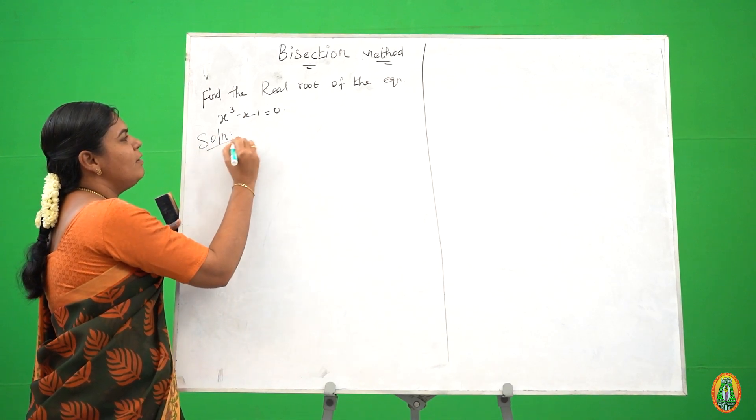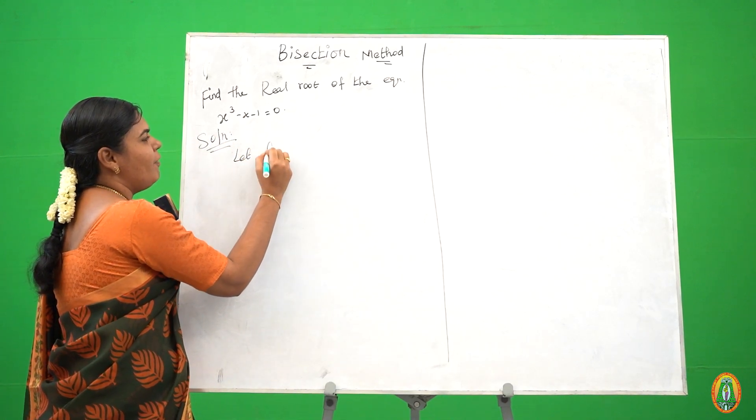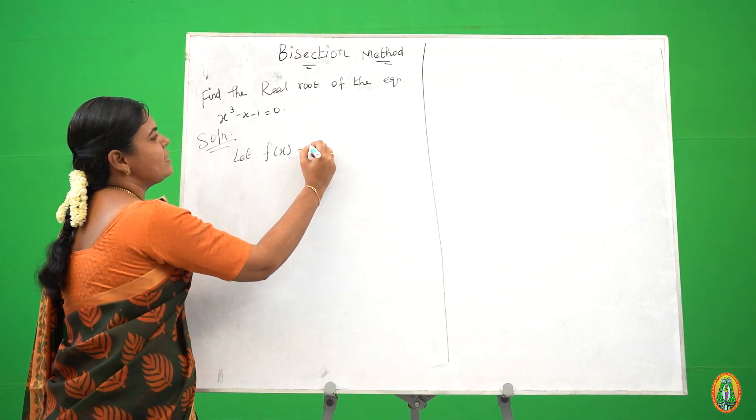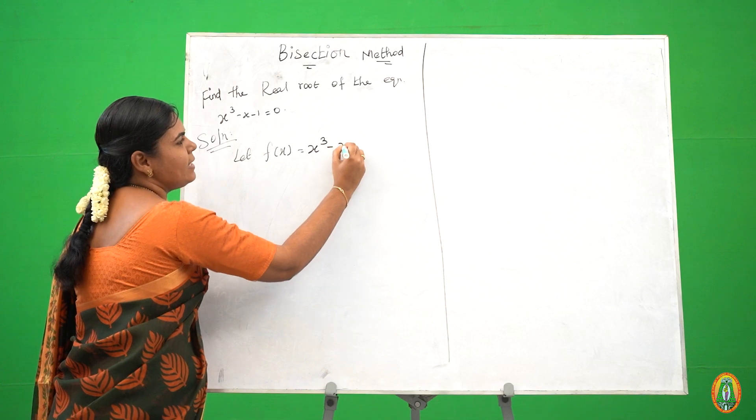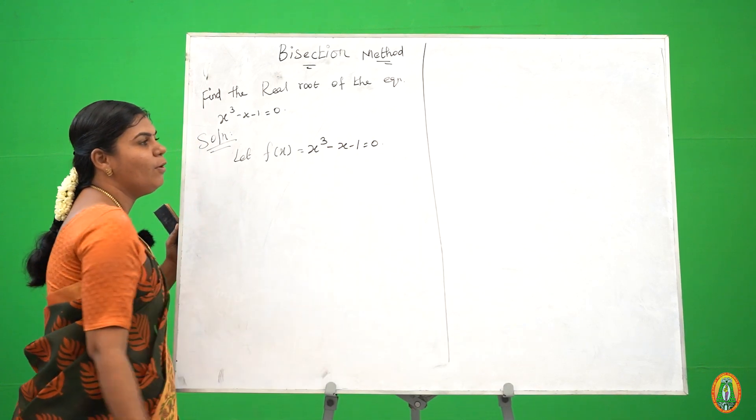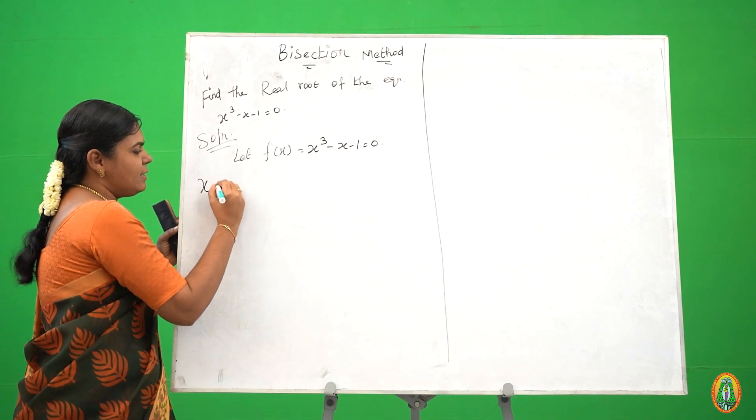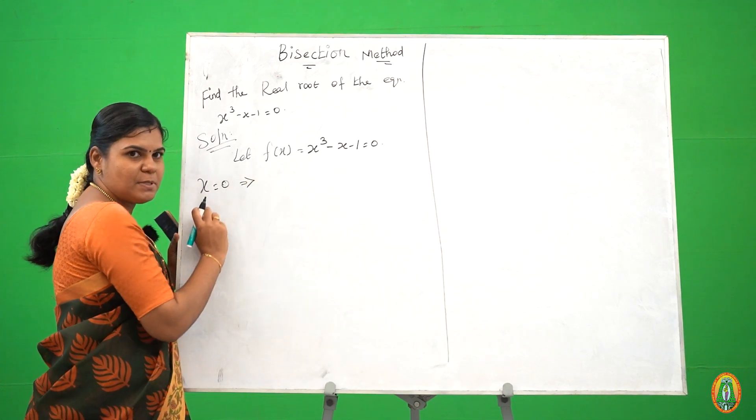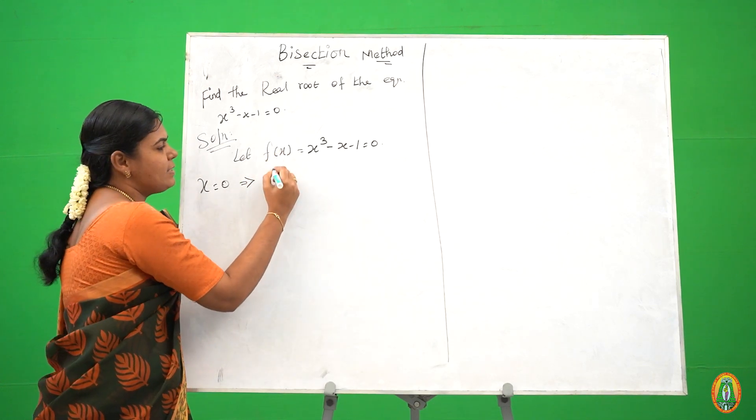So we find the solution. First let f of x. We take f of x is equal to this equation: x cubed minus x minus 1 is equal to 0. First let x is equal to 0. We substitute x in f of x.